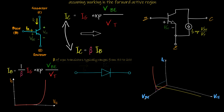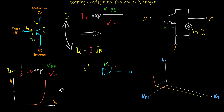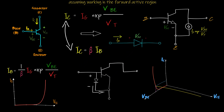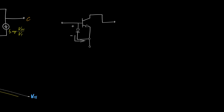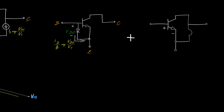We know that a diode is a non-linear resistor whose current varies exponentially with respect to the voltage across it. The base current is equal to that of a diode having a reverse saturation current of IS over beta. So it feels like there is a diode between the base and emitter, forcing the base current to be exponentially related to VBE. The current source between the collector and emitter has a value equal to the base current scaled by a factor of beta.